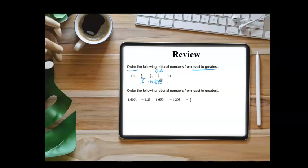So the smallest number is going to be the negative number that is the farthest away from zero, and that would be negative 1.2. The next smallest number is going to be the negative number that is in between the other two, and you can see that negative 5 eighths is negative 0.625. So we'll put negative 5 eighths here, and then negative 0.1 is going to be next.